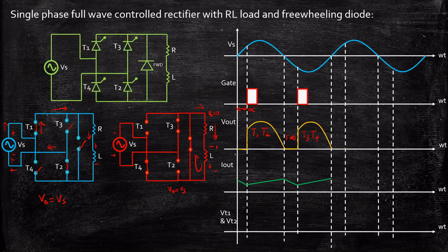The current again starts increasing as the inductor slowly charges with polarity plus and minus. In the next cycle, when the supply voltage goes positive again, freewheeling action takes place as the inductor does not allow sudden change in current and the cycle repeats. Freewheeling action takes place at this instant and the output voltage goes to zero while the freewheeling diode is conducting.